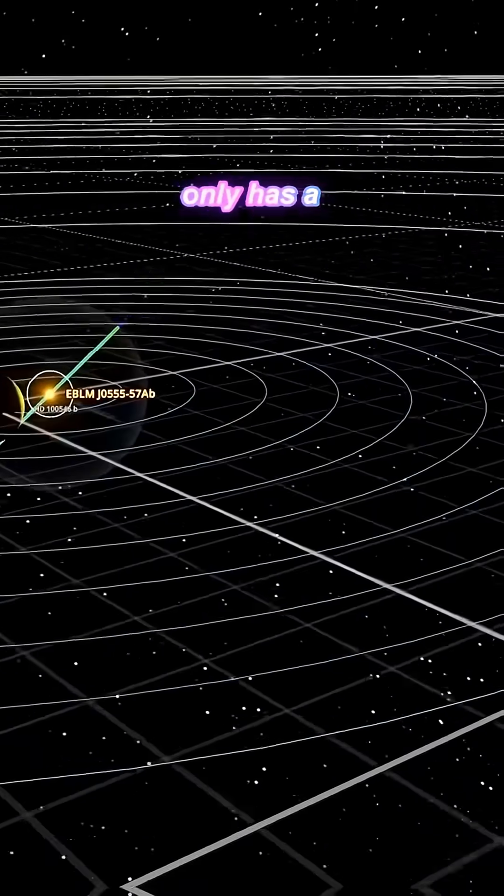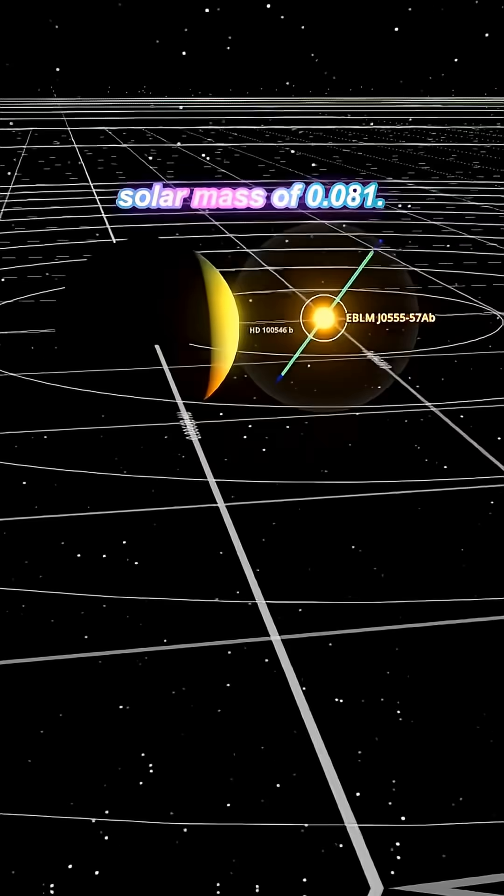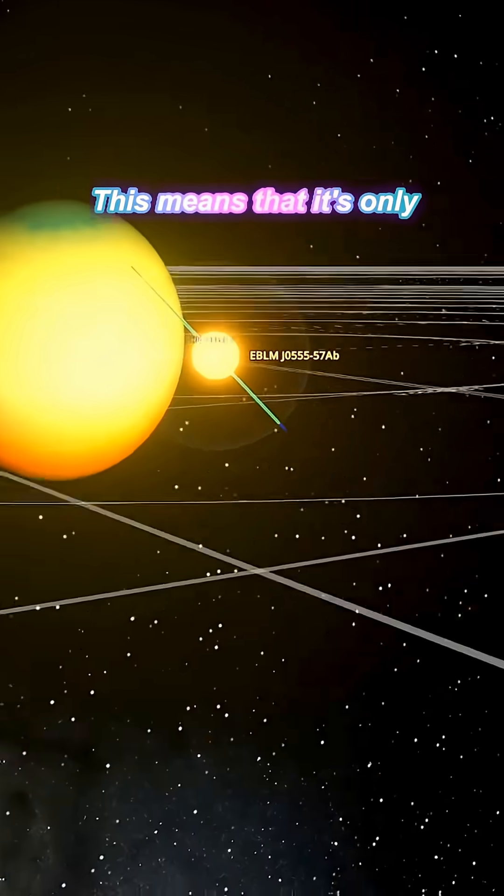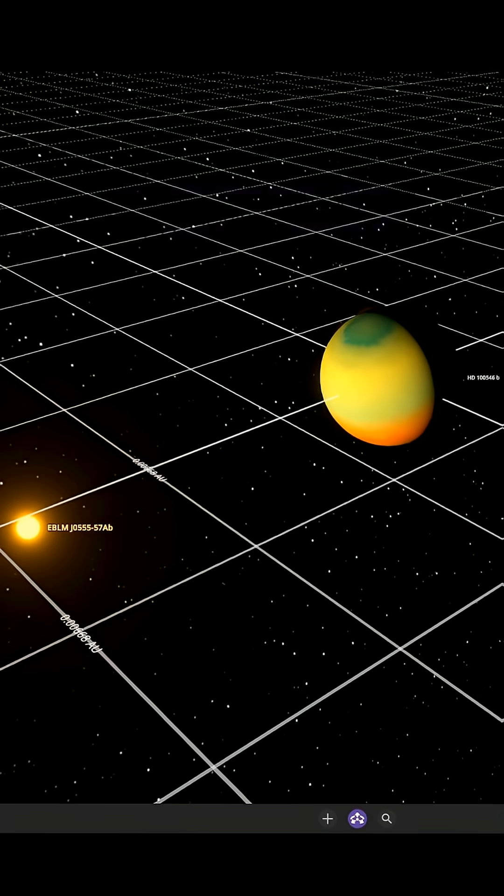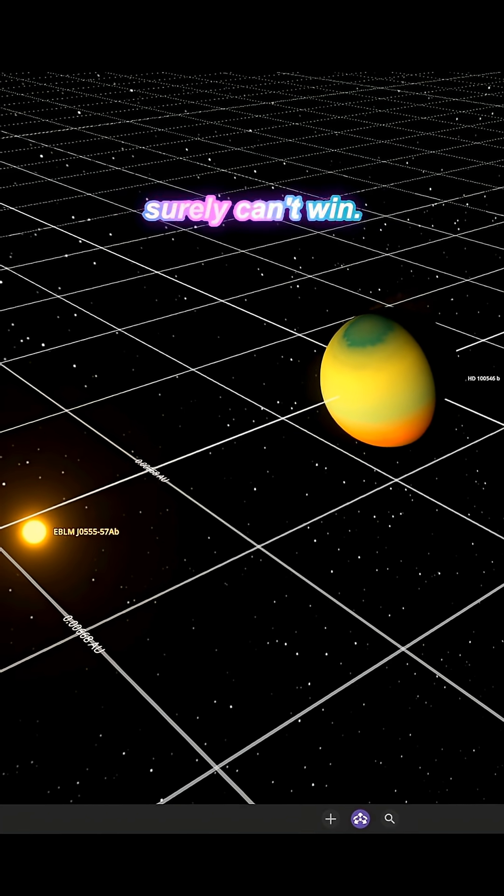It's a very small red dwarf that only has the solar mass of 0.081. This means it's only 0.081 the mass of our very own star. Against a planet so large, it surely can't win.